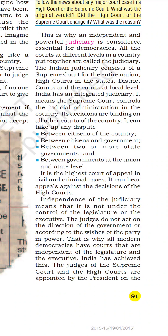If your fundamental right is violated, you can directly go to the Supreme Court. The Supreme Court controls judicial administration in the country and its decisions are binding on all other courts. It handles disputes between citizens, between citizens and government, between two states — for example a water-sharing dispute — and between the union government and state governments. It is the highest court of appeal in both civil and criminal cases.